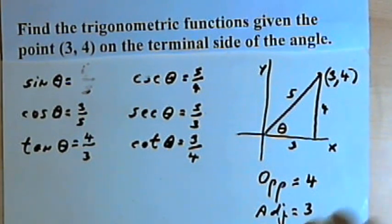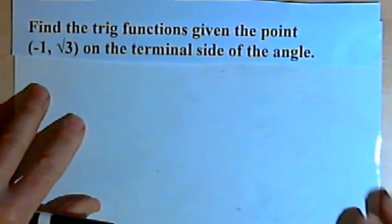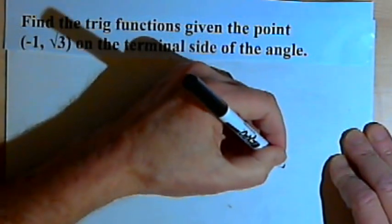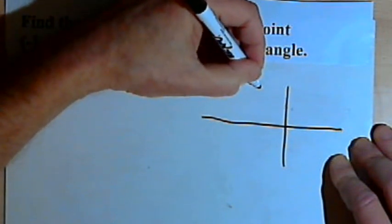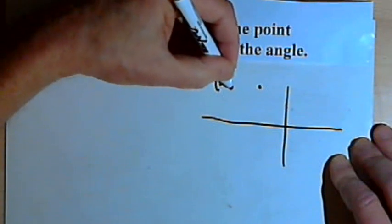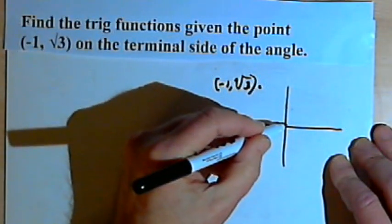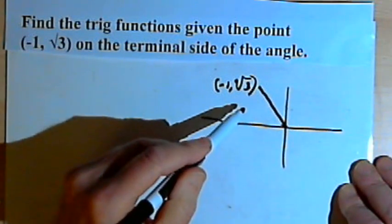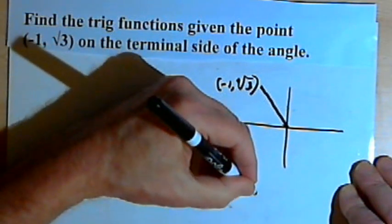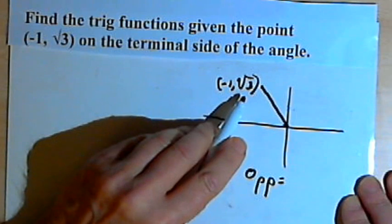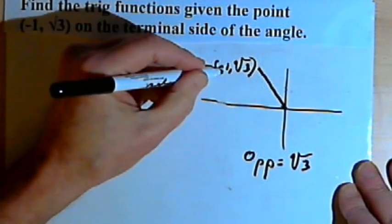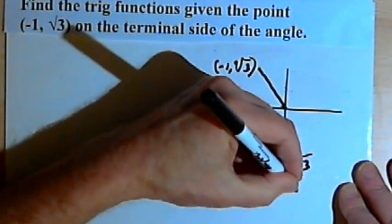So that's the basic concept. Let's do a slightly harder one. This problem says: find the trig functions given the point (negative 1, square root of 3) on the terminal side of the angle. We can draw a quick picture — we're going to have something at negative 1, square root of 3, so that's going to be in the second quadrant. The opposite side is going to be the y-value, which is the square root of 3. Don't be scared by the fact that it's a square root. The adjacent side is going to be the x-value, or negative 1. And don't be scared by the fact that it's negative.